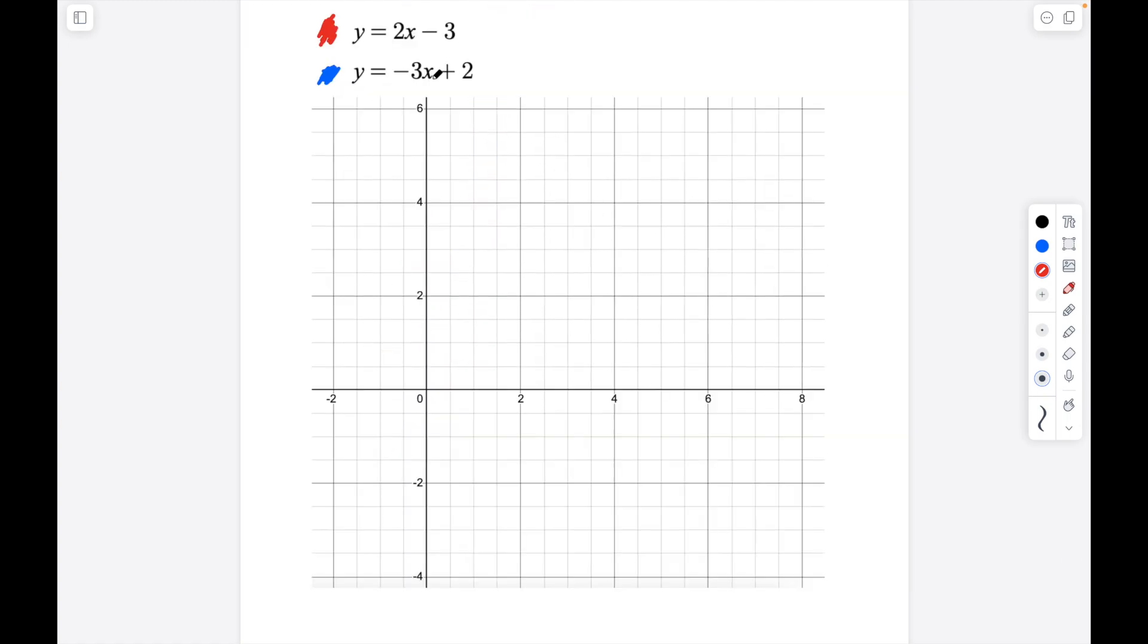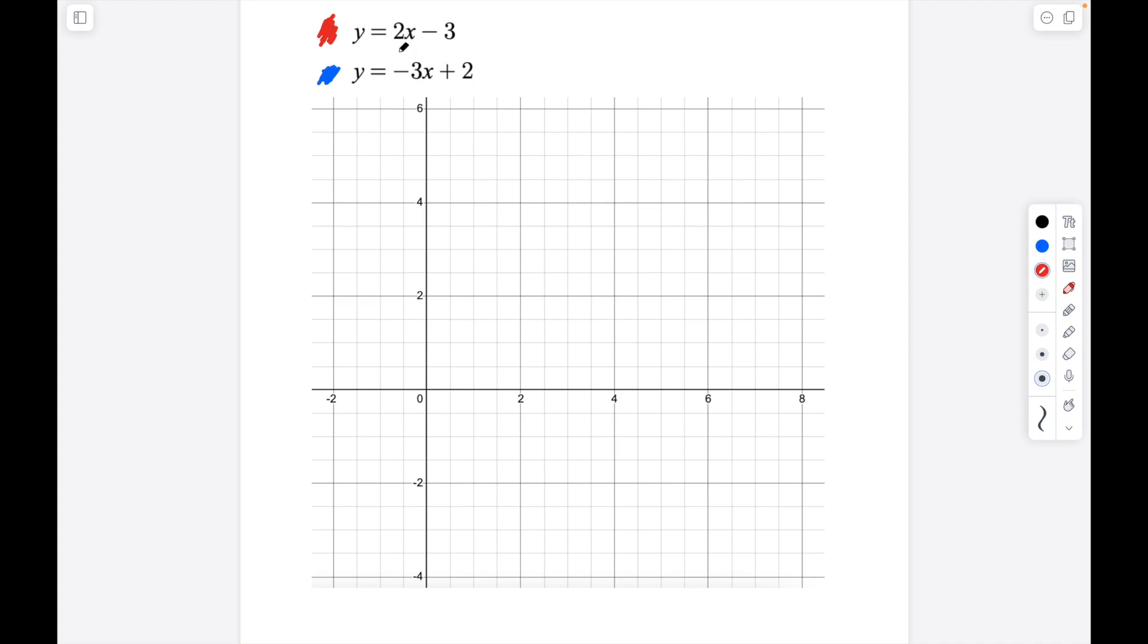Let's take a look at another example. Right away taking a look at this linear system you can see that I have two different slopes. So I know that these two lines will not be parallel. Remember parallel lines are two lines that have the same slope and will never intersect.